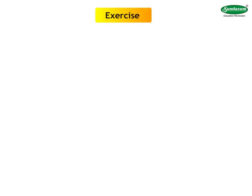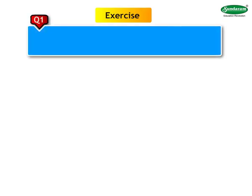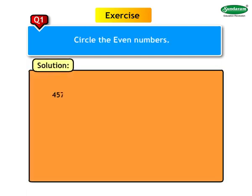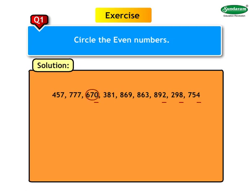Now let us do the exercise from page number 20. Question 1: Circle the even numbers. As the digit in the units place of 670, 892, 298, and 754 are even, these numbers are also even. Therefore, 670, 892, 298, and 754 are even numbers.